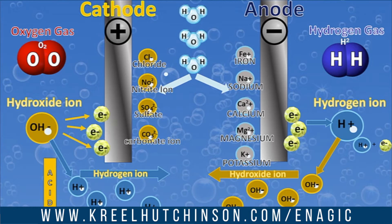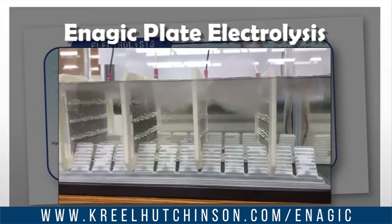Down this pipe, the acidic water would go down — and this is the water that we use for other things like cleaning and disinfecting. On the other side is where the Kangen — the beautiful Kangen water — gets created. With that being said, let me show you this video from the Enagic facility where they build our machines.